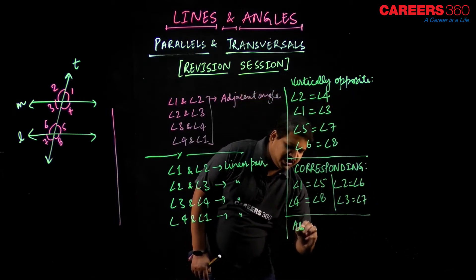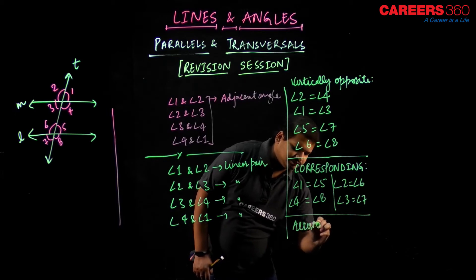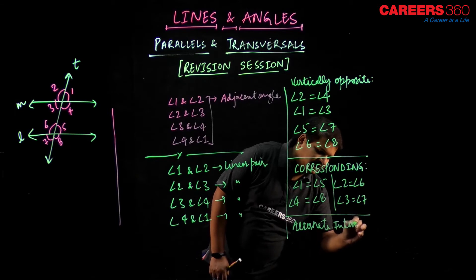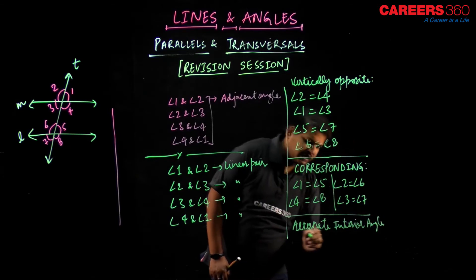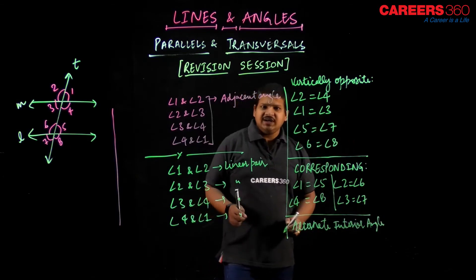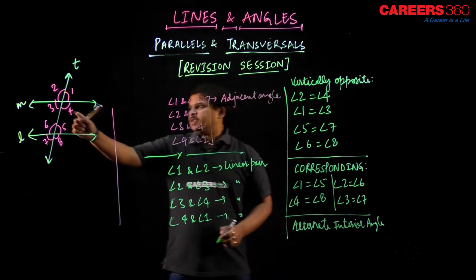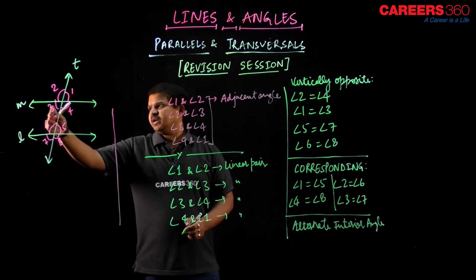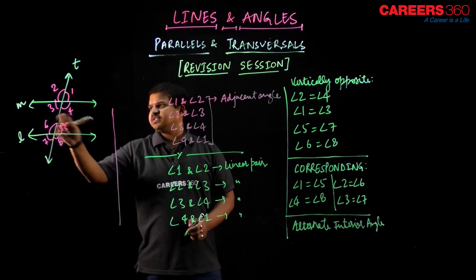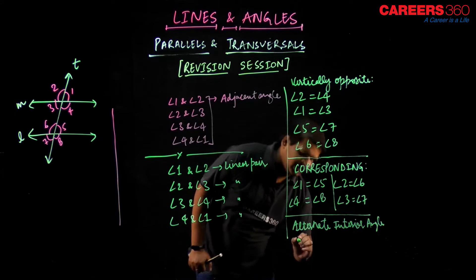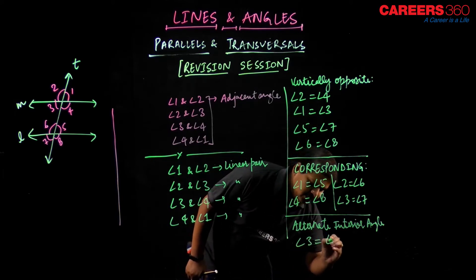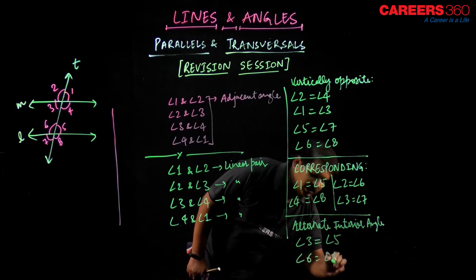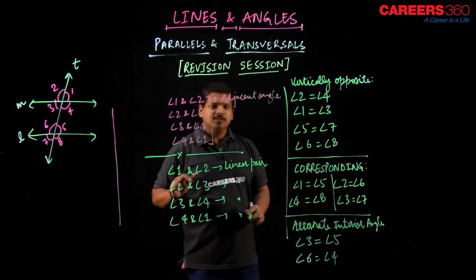Next we have alternate interior angles. The interior angles are 3, 4, 5, and 6. The alternate interior pairs are angle 3 and angle 5, and angle 4 and angle 6. So angle 3 equals angle 5, and angle 6 equals angle 4.